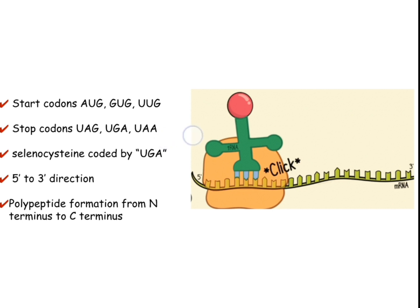The translation process starts from the start codon and stops at the stop codon. These three stop codons cannot code any kind of amino acid among the 22, that is why they are called stop codons. However, there is an exception: selenocysteine, the 21st amino acid, is the only amino acid which can be coded by the stop codon UGA.